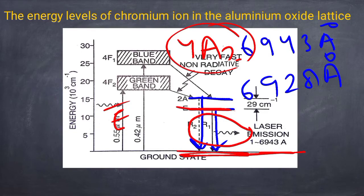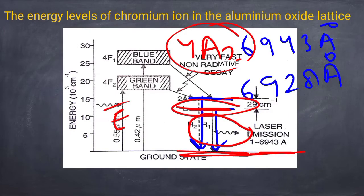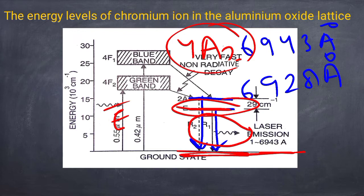Laser action occurs only at the R1 line because it attains threshold before R2 due to higher population inversion at the E-bar level. Once laser action starts at R1, the E-bar level gets depleted, and population transfer from 2A-bar occurs so rapidly that the threshold for R2 is never achieved. Thus, laser action takes place between E-bar and 4A2, giving red light of wavelength 6943 Å.